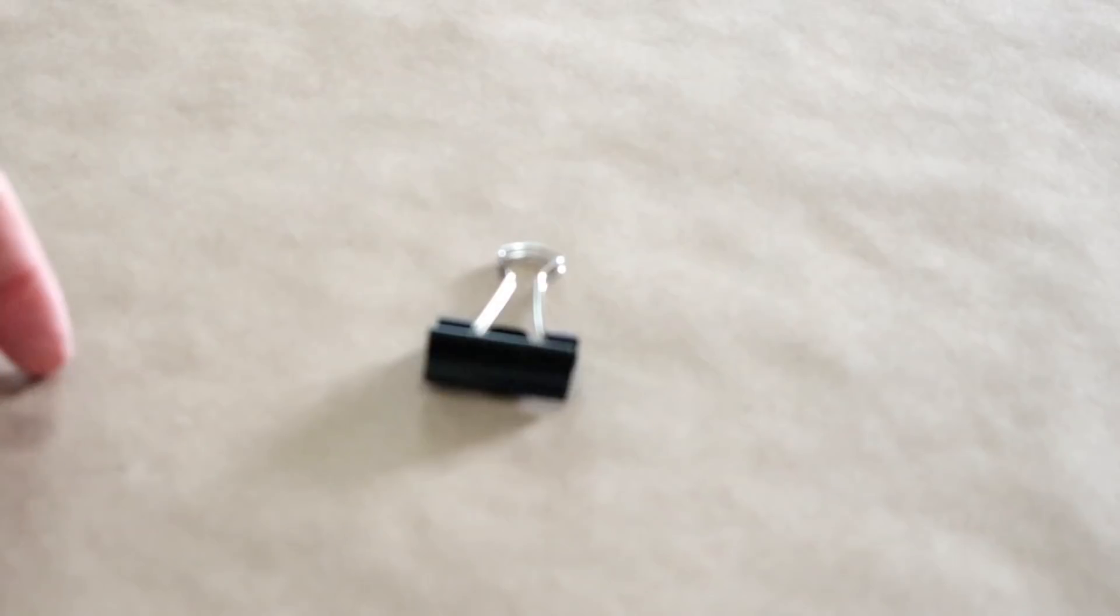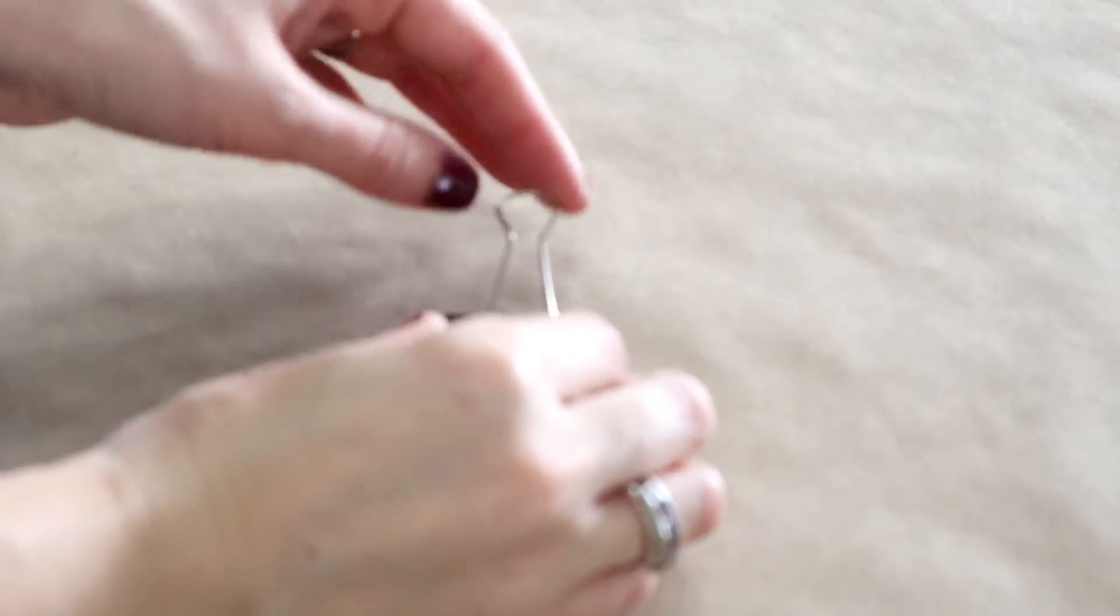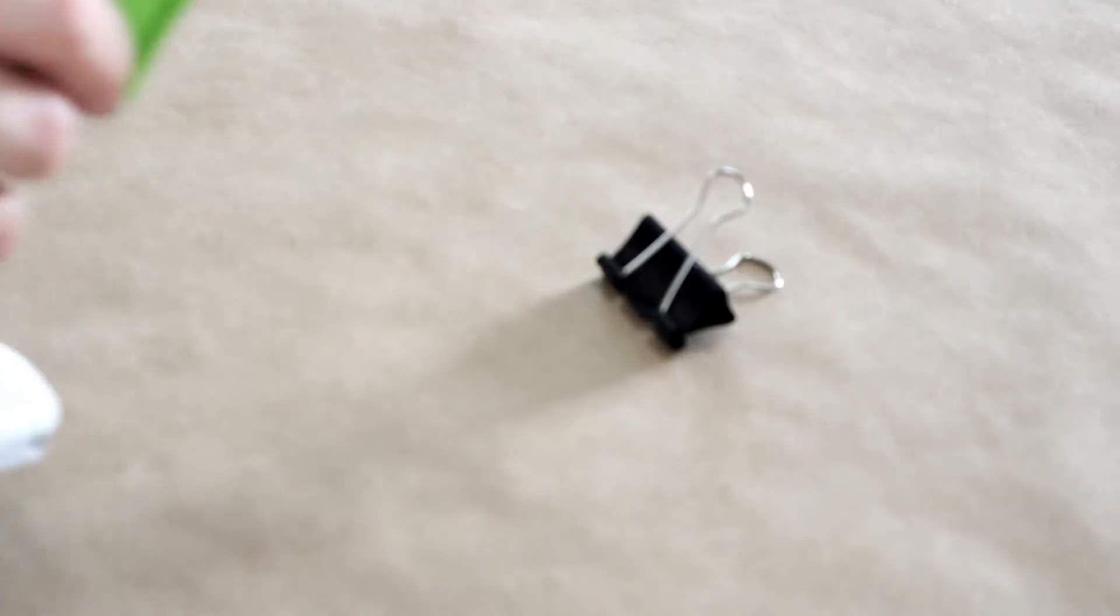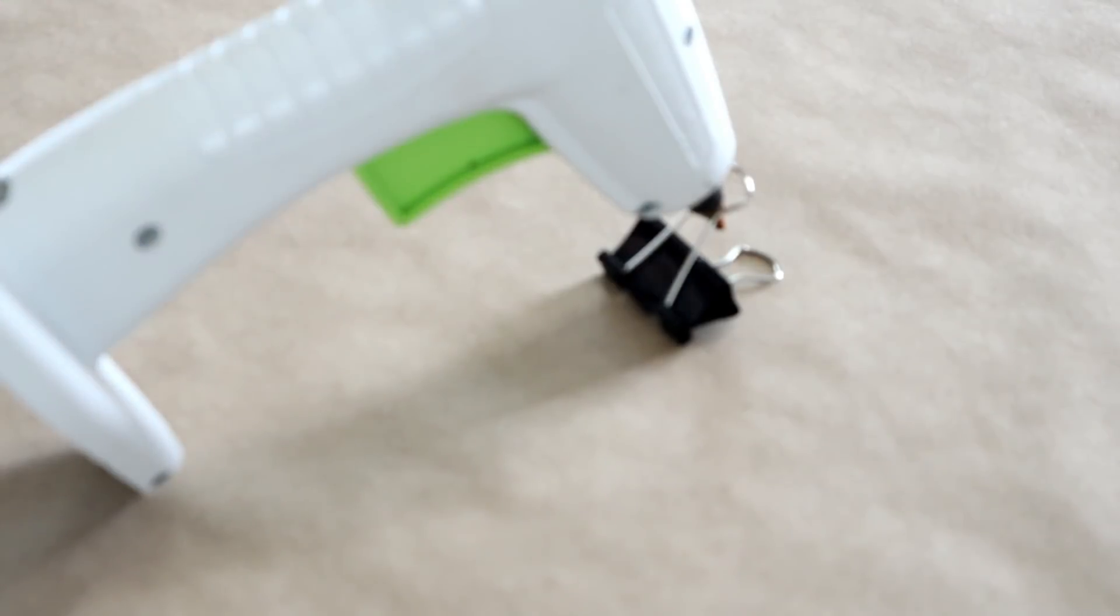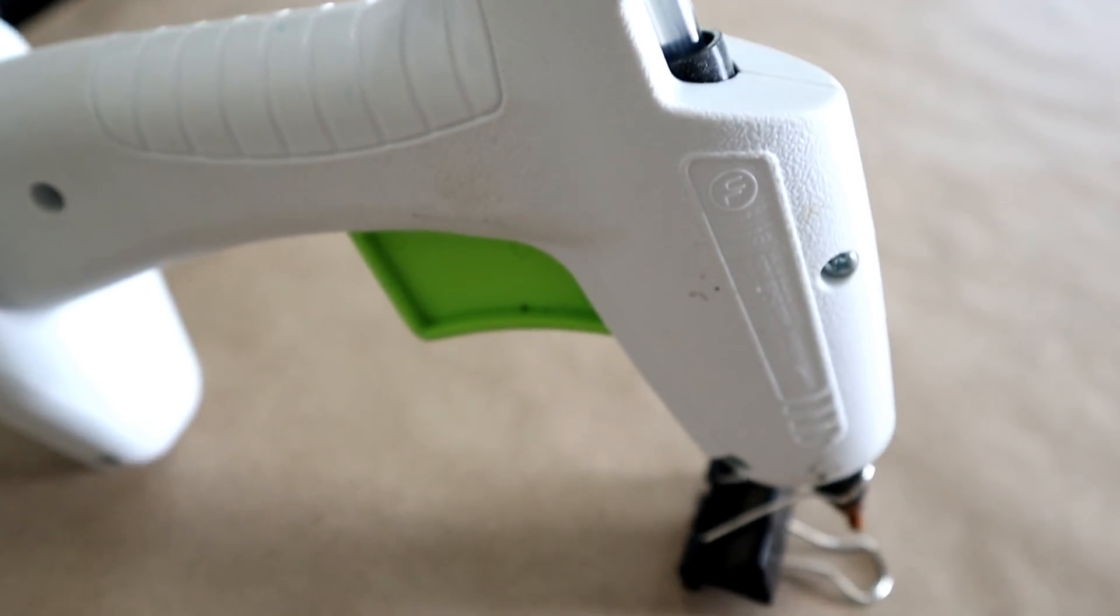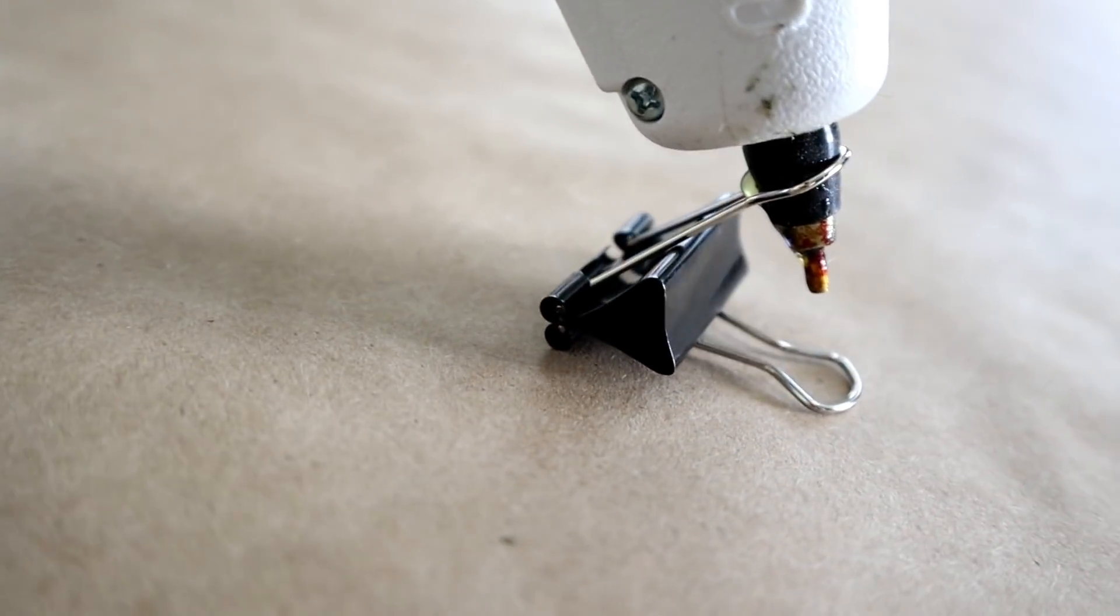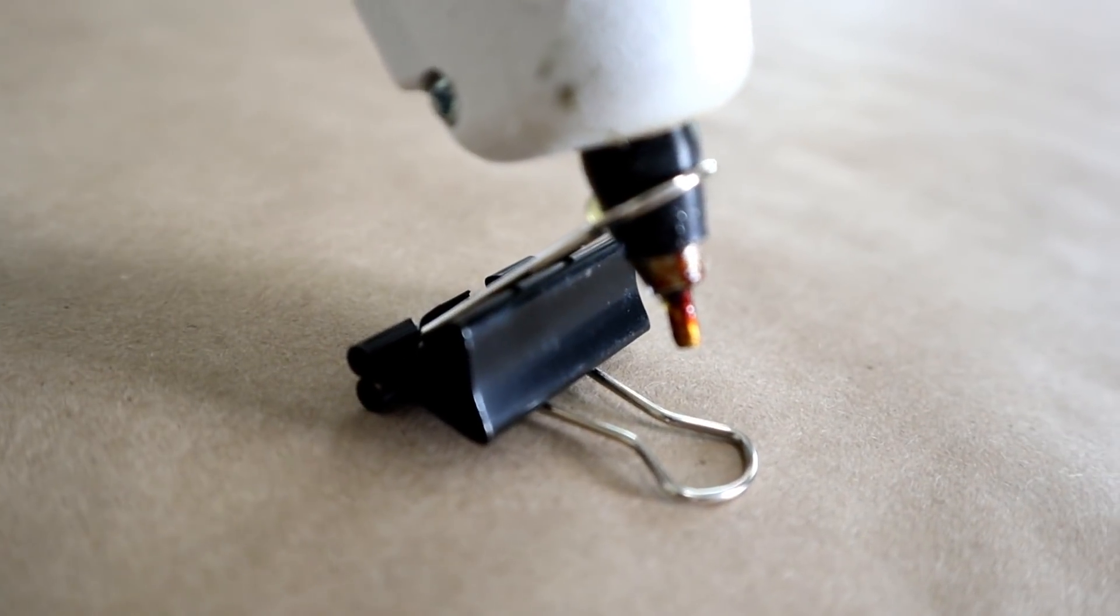Another useful item from the Dollar Tree are these binder clips. All you have to do is flip those clips back on your binder clip and use it as a stand for your hot glue gun. This keeps the hot tip of your glue gun off of your work surface.